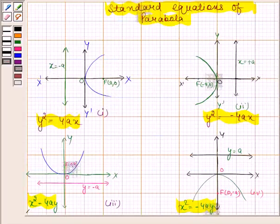Note that if the focus of the parabola is at the point (a,0) and its directrix is x equals to minus a, then equation of parabola is of the form y squared equals to 4ax.